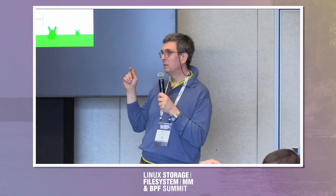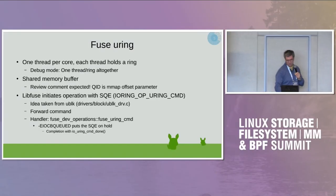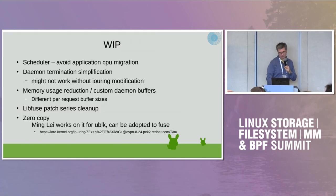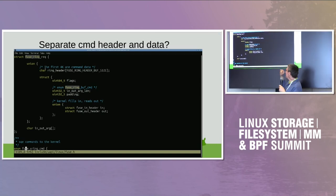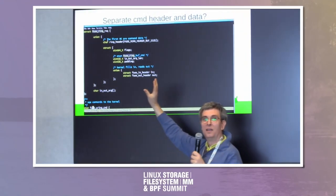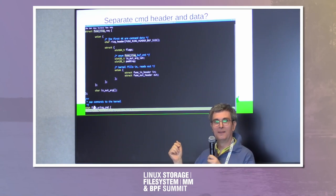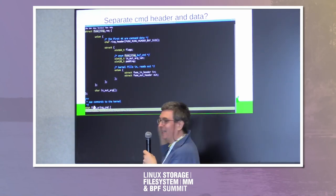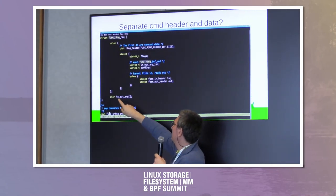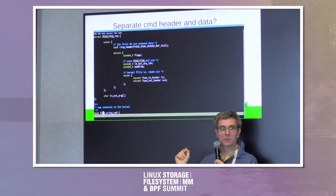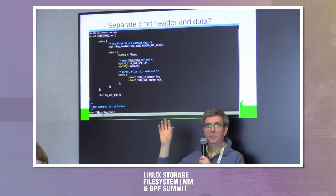We recently had an issue in libfuse where copying the libfuse header caused an incompatibility. This is the struct for the ring request. When I brought the code, I initially had all the in/out headers — those are the basic information — but the per-command information are basically here, and that's very similar to what the current /dev/fuse does. It has the I/O buffer, which could be a one megabyte buffer.